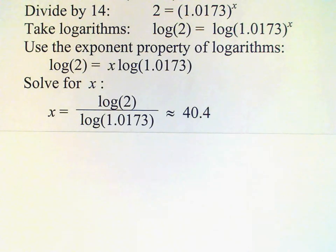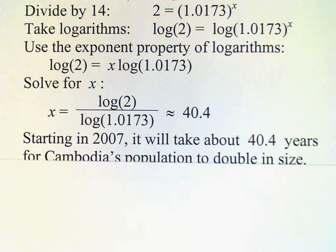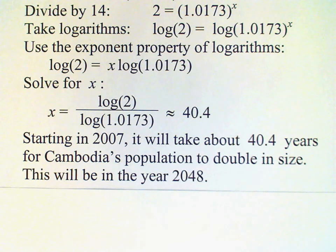Now remember, the original problem says to find the year when Cambodia's population will double, so that means we need to add that 40.4 to the original year, which was 2007, and that brings us up to 2048 or so.